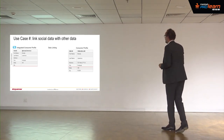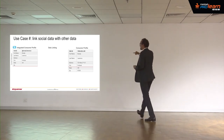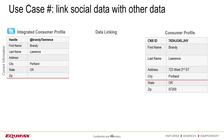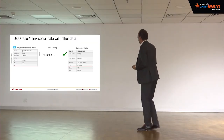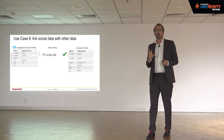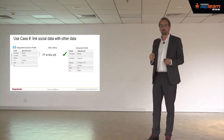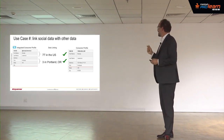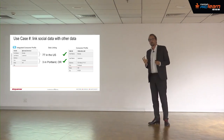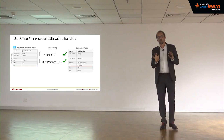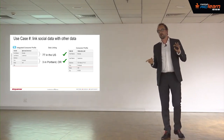Since we have a reference database — a consumer profile database with unique ID identifiers — we look at all the Brandy Lawrences who live in Portland and try to match. In the US, there are only 77 Brandy Lawrences, and those living in Portland amount to only three people. So we were almost there — able to link a tweet to three different physical people.